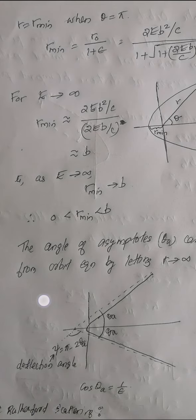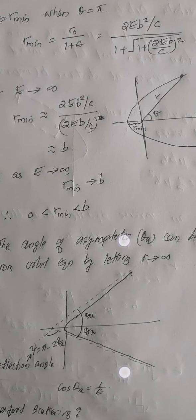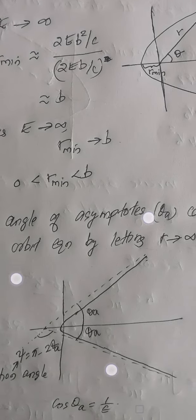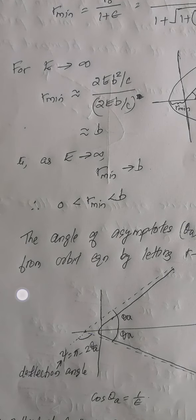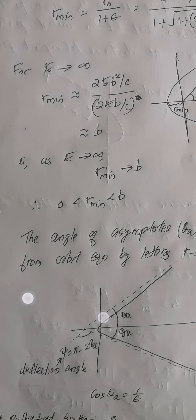The very minimum value of r is 0, and it can extend up to b, the impact parameter. Now, we can calculate the angle of asymptotes. The asymptotes are the dotted lines shown here, and we let r tend to infinity. This angle theta_a is called the angle of asymptote. The deflection angle psi is pi minus 2*theta_a. In this way, you can calculate the deflection angle.